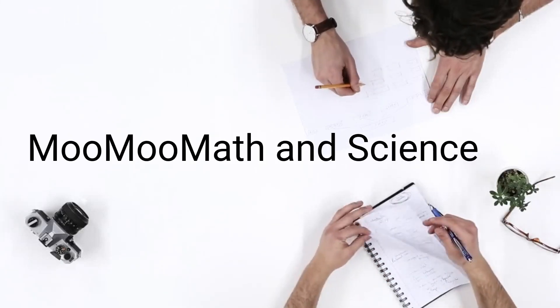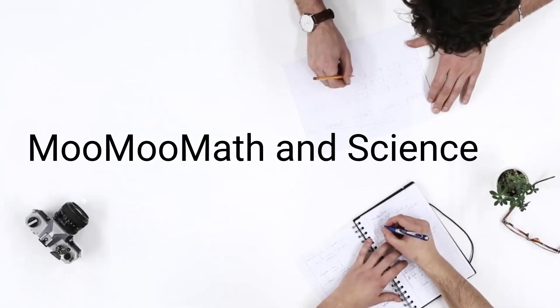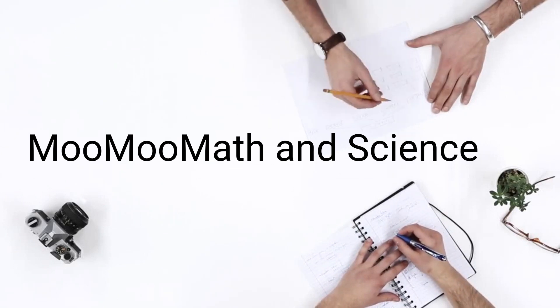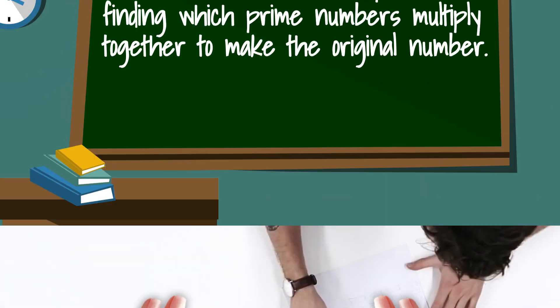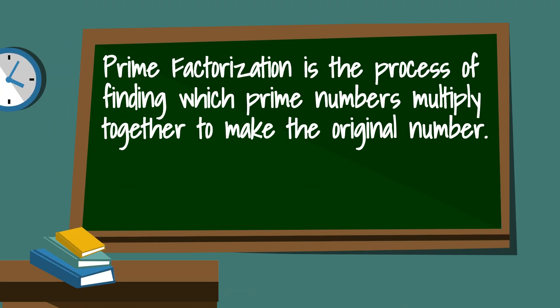Welcome to Moo Moo Math and Science. In this video, I'd like to show the prime factorization of 42 and 60. Prime factorization is the process of finding which prime numbers multiply together to make the original number.